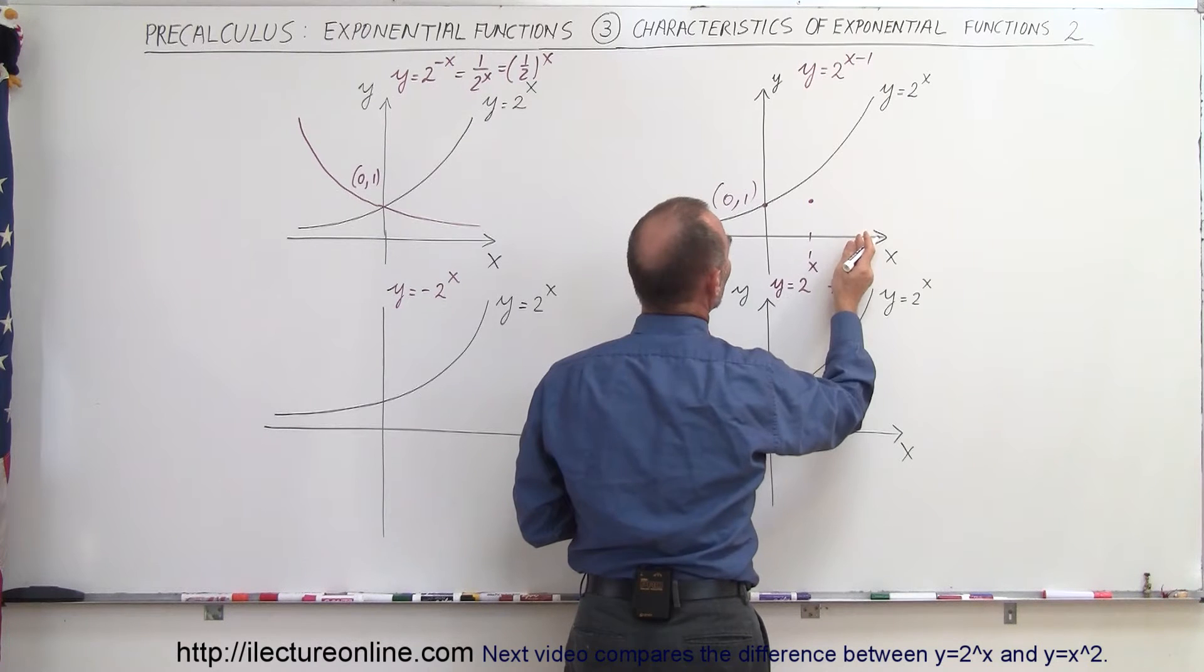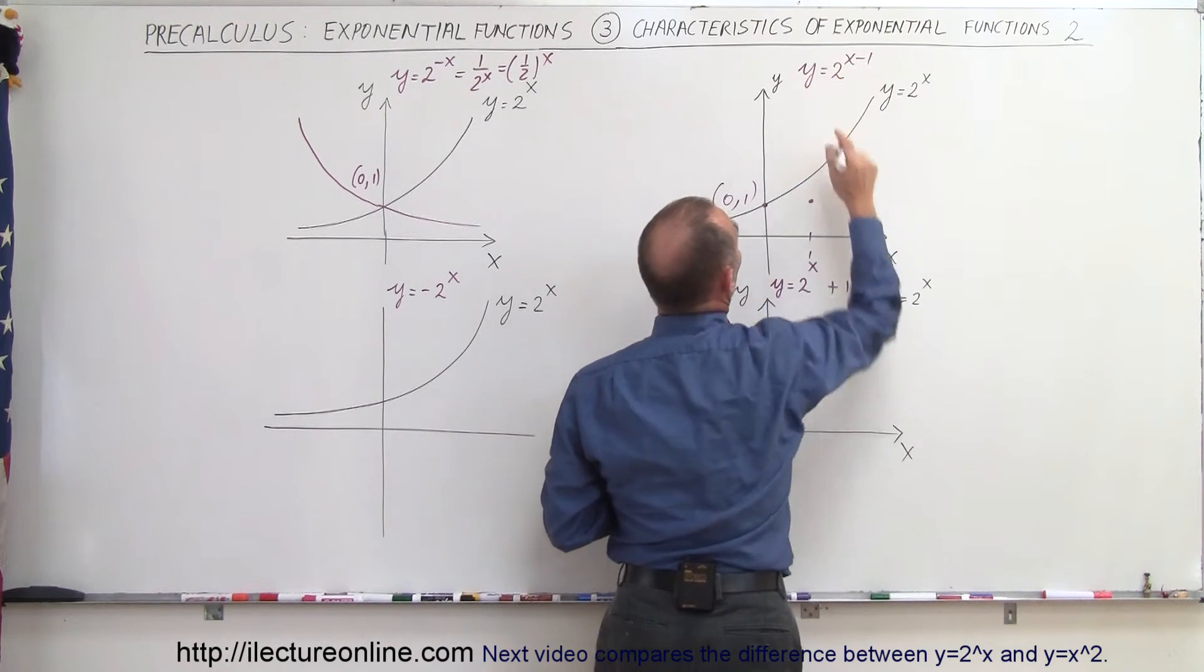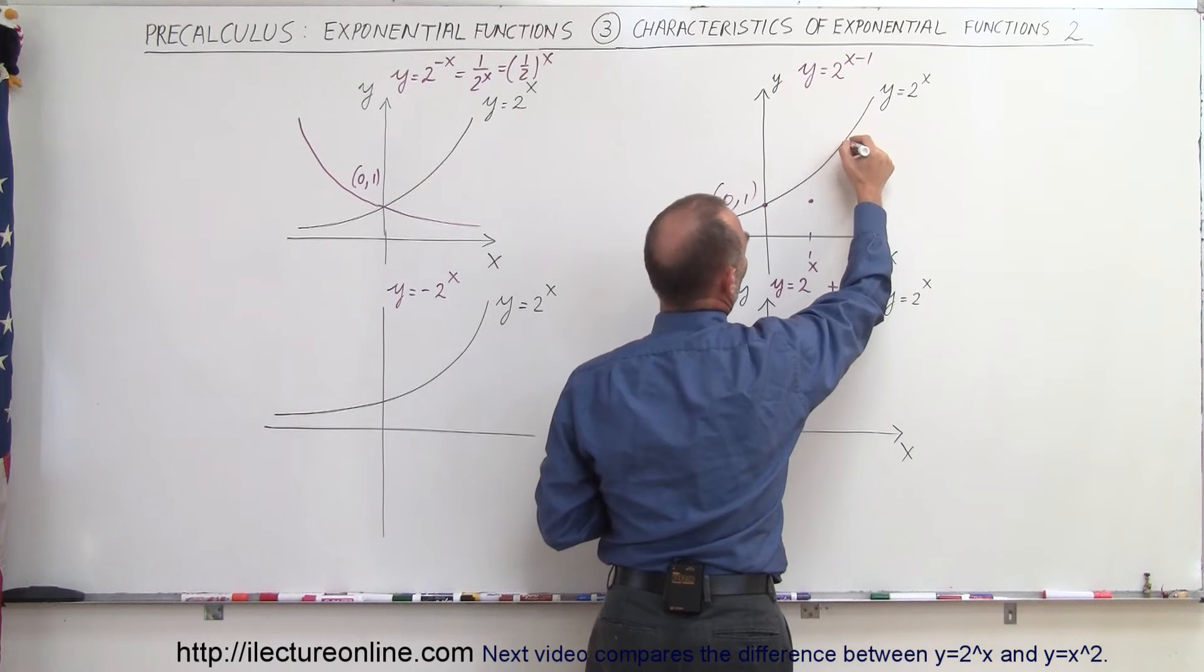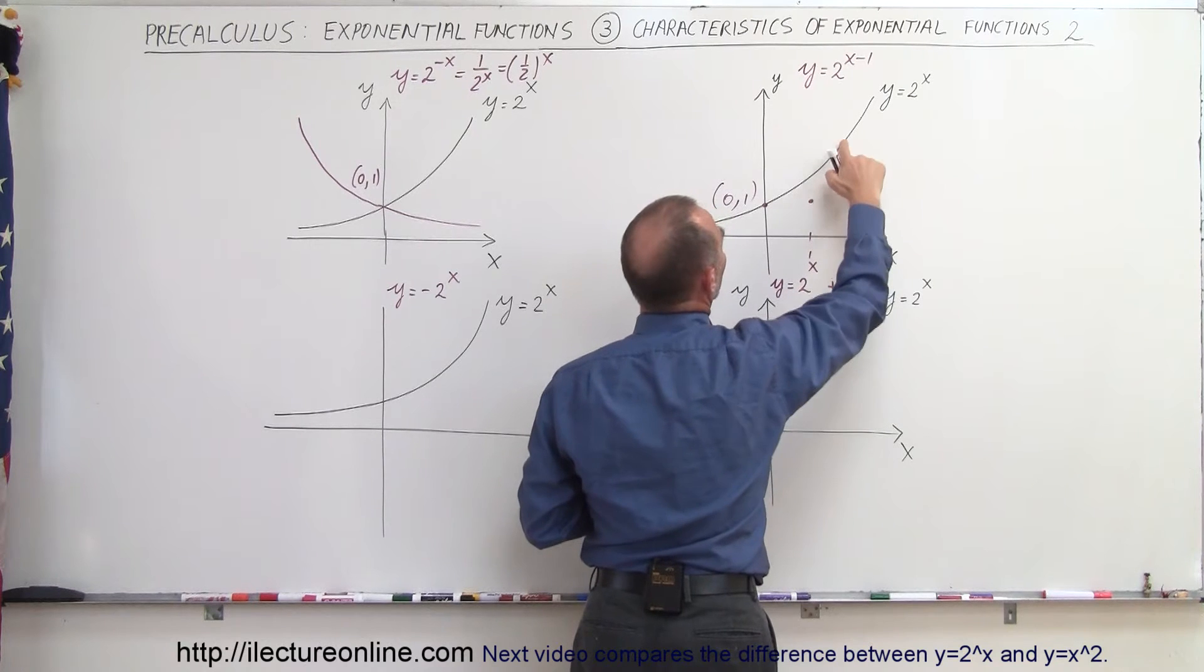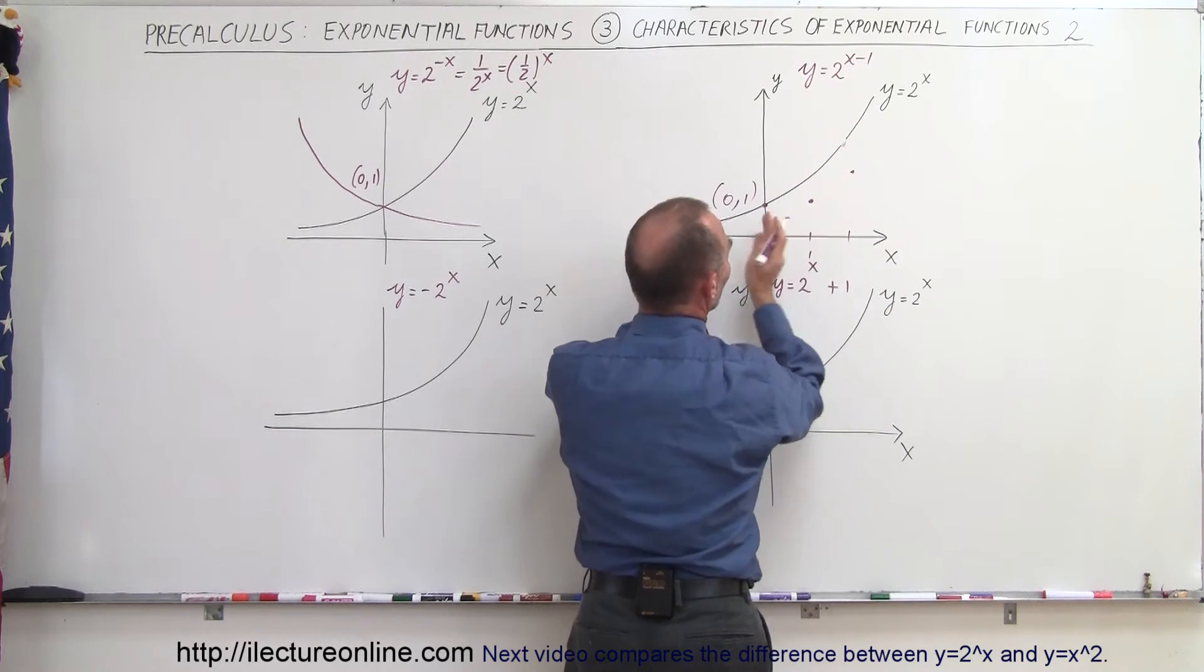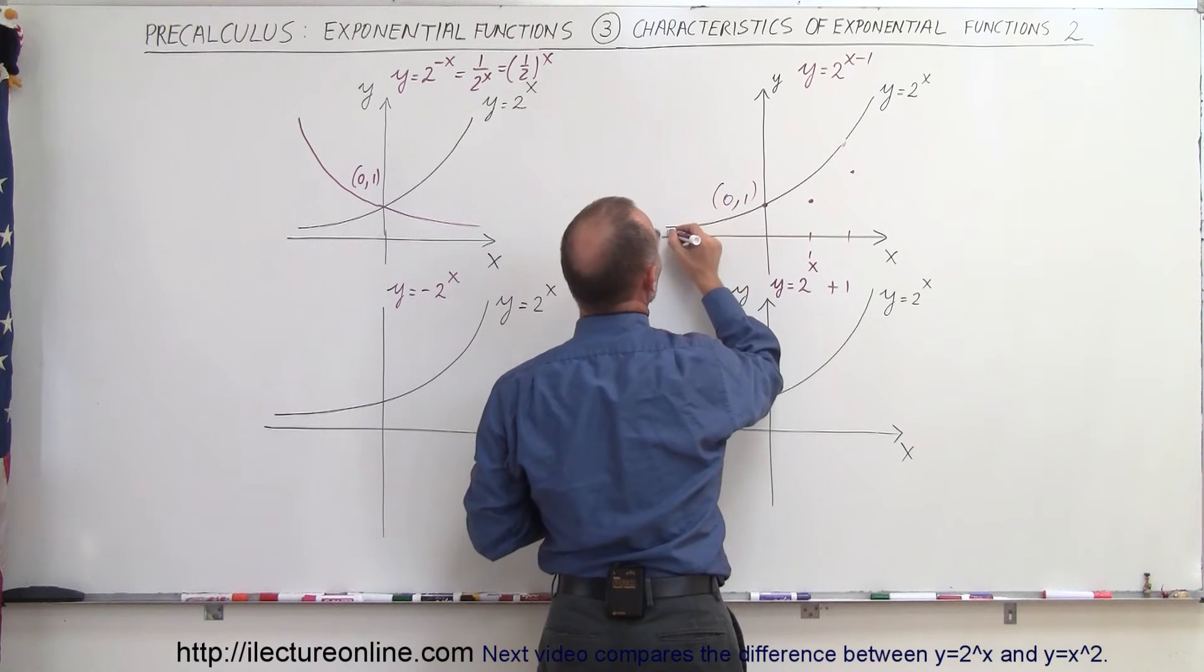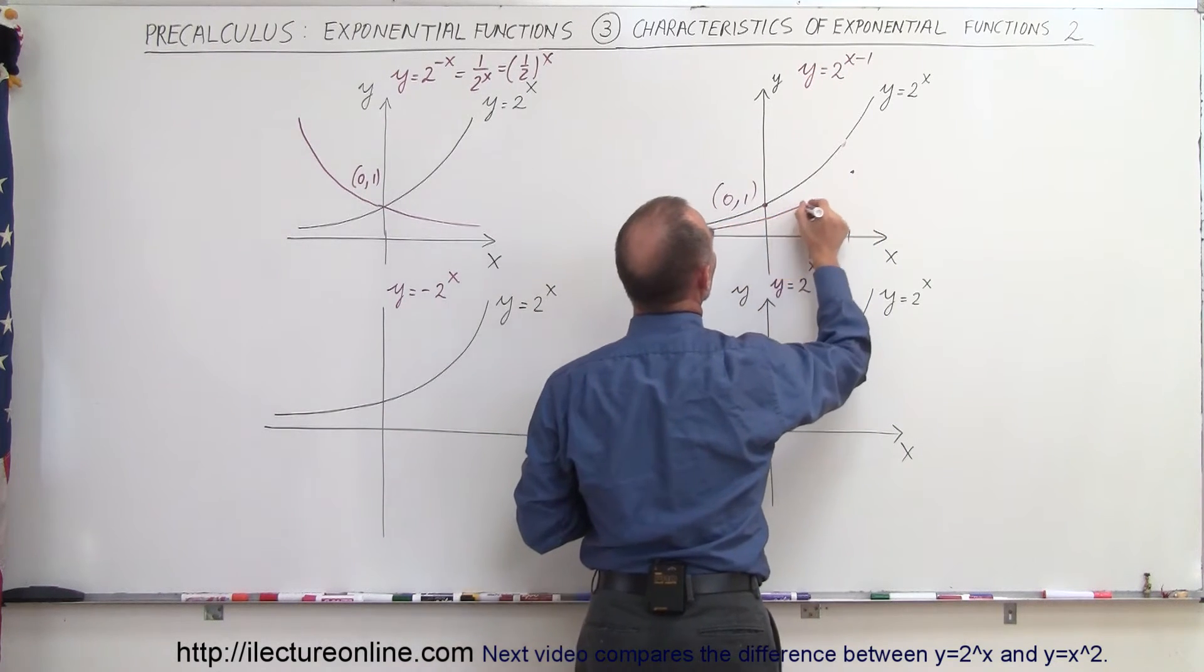When x is equal to 2, 2 minus 1 is 1, y will be equal to 2, so we'll be right over here. So when x equals 2, y will be 2, sorry, I'll take that back, y will be 2 right here, can't grow that fast. So basically it took the whole function, moved it to the right, so the function will look like this.